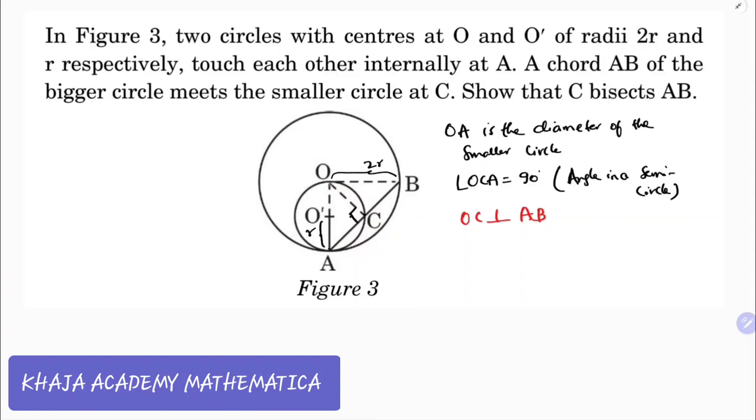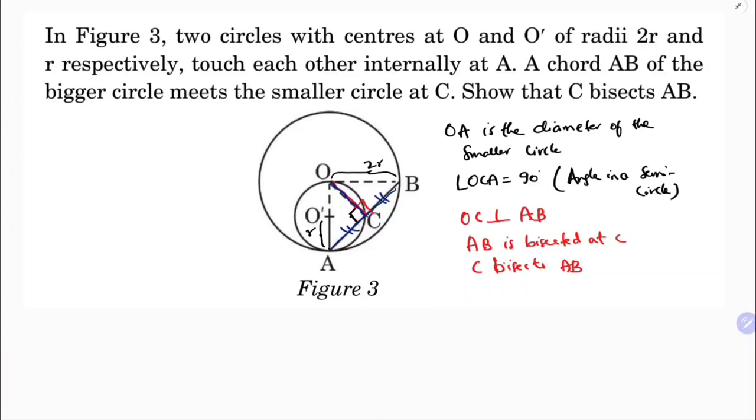it bisects the chord. Therefore AB is bisected at C because OC is perpendicular to AB. You can say C bisects AB because it's a property: a perpendicular drawn from the center to the chord bisects the chord. So C bisects AB.